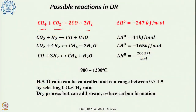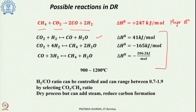Looking at the possible reactions in dry reforming of methane: the primary reaction is methane reacting with carbon dioxide to produce syngas. Other reactions that can occur include ones where hydrogen is consumed — carbon dioxide as oxidant reacts with the hydrogen product to produce CO and H2O, which reduces the hydrogen yield.